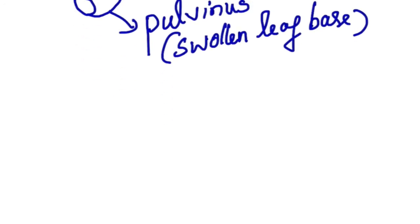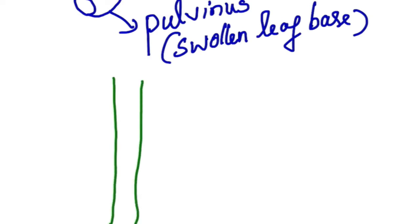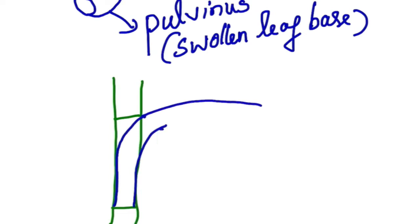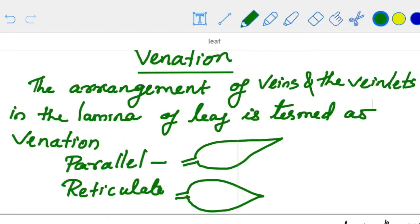In monocot plants, for example sugarcane, grass, paddy, and bamboo, the leaf base forms a sheath-like structure that surrounds the stem. The veins and veinlets in the lamina of the leaf are termed as venation. There are two types of venation: parallel venation and reticulate venation.